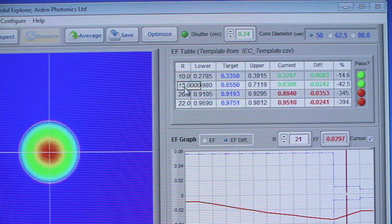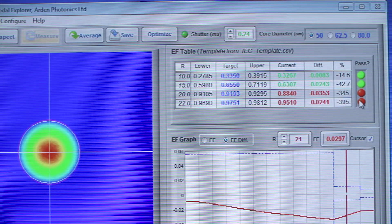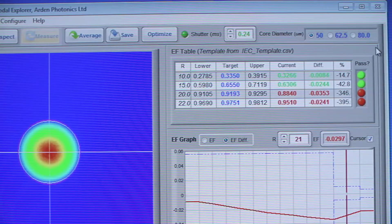The table of EF data shows the currently selected template limits at each radius, real-time encircled flux values, and a visual pass-fail indicator.